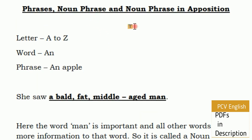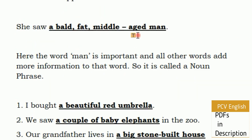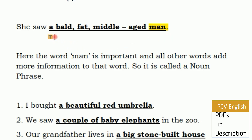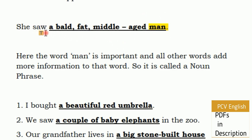Now, we will show the noun phrase. For example: 'She is a bald, fat, middle-aged man.' In this case, the man is the noun — the head noun. 'She is a bald, fat, middle-aged man' — here, the noun is the head of the noun phrase.